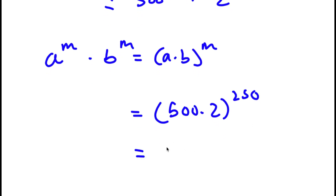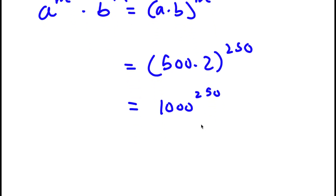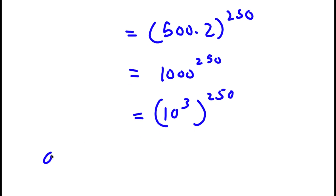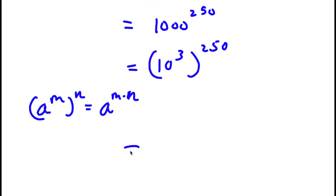500 times 2 is 1,000, so I have 1,000 to the power of 250. Now, 1,000 is the same thing as 10 to the power of 3. So now I have 10 to the power of 3 to the power of 250. If I have something in the form A to the power of M to the power of N, this equals A to the power of M times N. So 10 to the power of 3 to the power of 250 equals 10 to the power of 3 times 250, which is 10 to the power of 750.